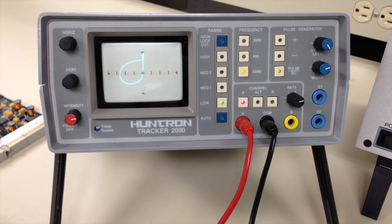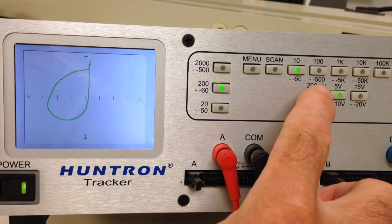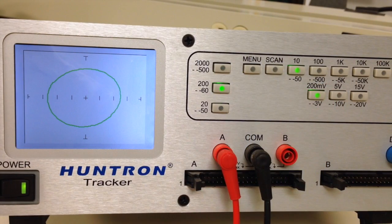Here is a 10 microfarad capacitor in parallel with a diode using the 2000 low range. Here is the same circuit using a 2800 set at 200 millivolts. The voltage is too low to activate the diode threshold, so you'll only see the signature from the capacitor.